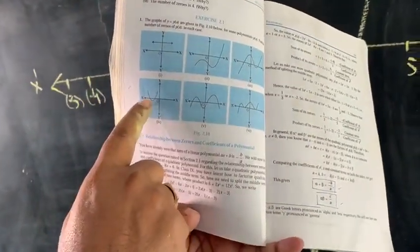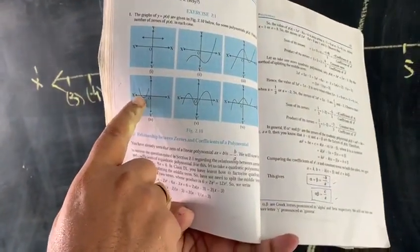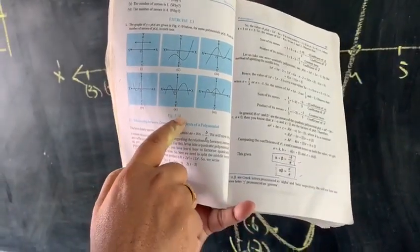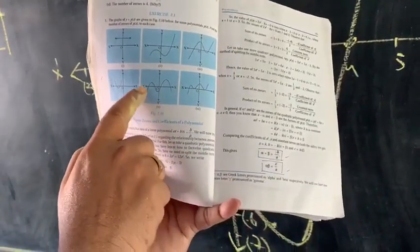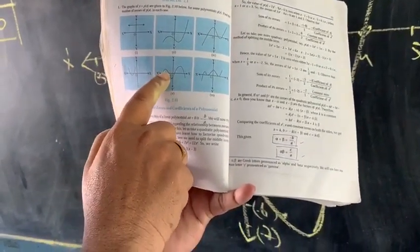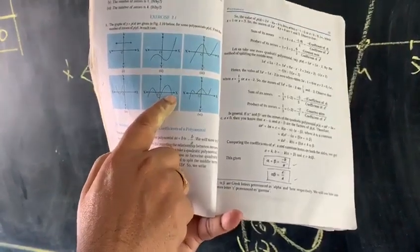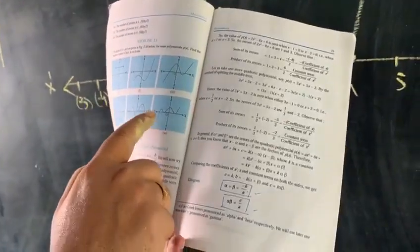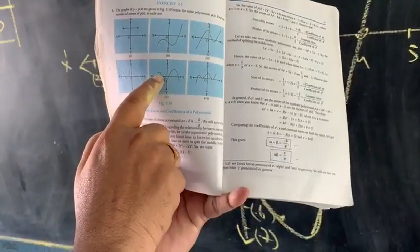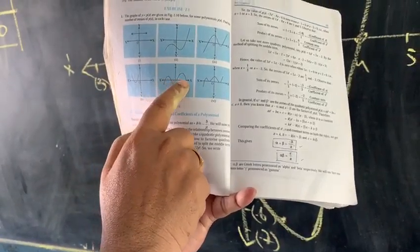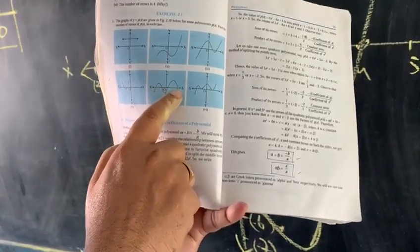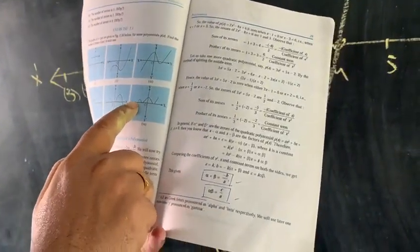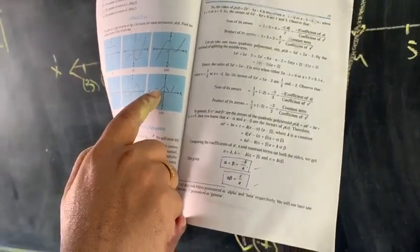In the fourth graph, it is one and two — two zeros. See the fifth one: one, two, three, and four — four zeros are there. The next one is one, two, three, and four — four zeros. The next one is one, two, three — three zeros.